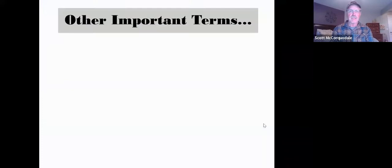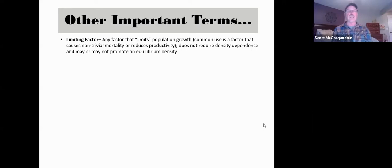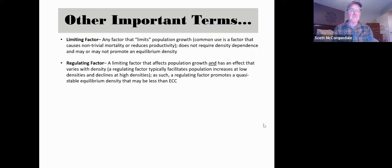Just a few more important terms—these are on the glossary. I'm not going to hit very many of the terms on the glossary; we'd certainly be happy to answer anybody's questions at any point about anything on that glossary that we don't talk about today. Here's a few that I think are pretty important, and you will absolutely see these if you start reading the literature about ungulates and predation effects. Limiting factor: a limiting factor is any factor that limits population growth. Its common use is a factor that causes non-trivial mortality or in some way systematically reduces productivity. It does not require density dependence and it may or may not promote an equilibrium density.